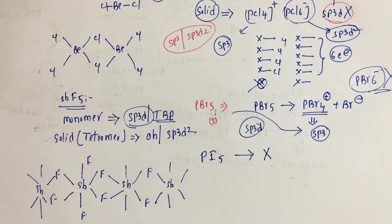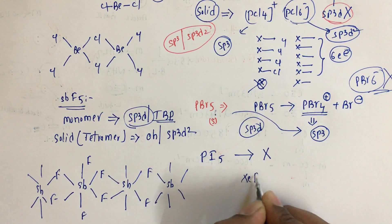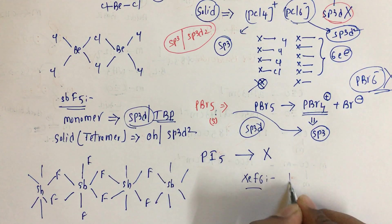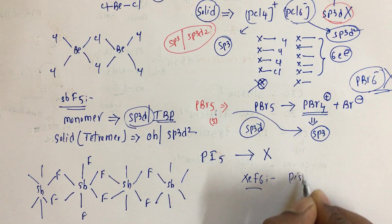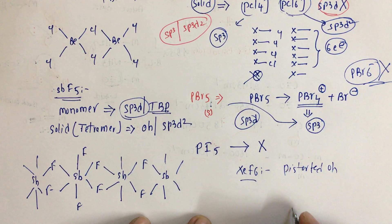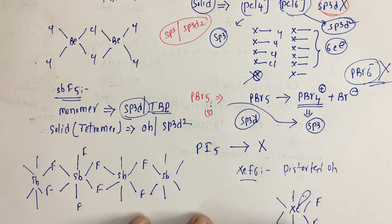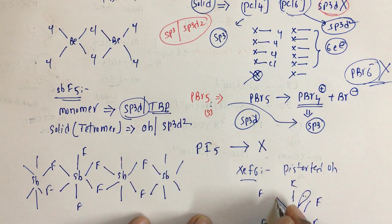Even XeF6 has a distorted octahedral structure because it has one lone pair of electrons. That lone pair occupies one position, causing the distorted octahedral shape.